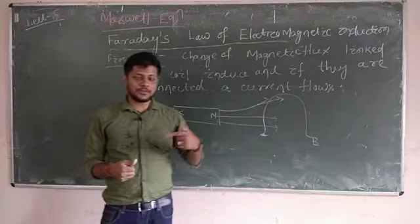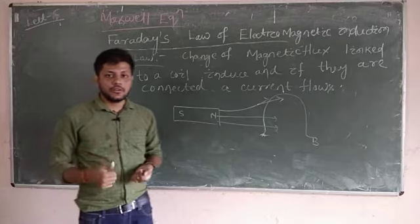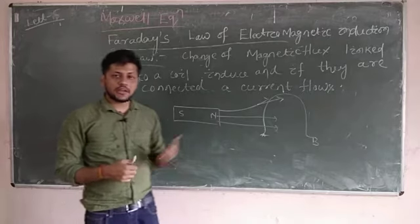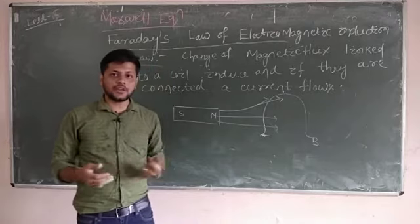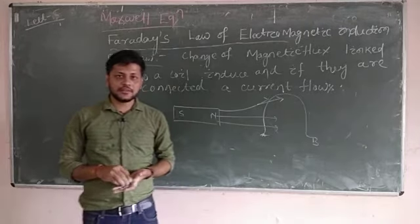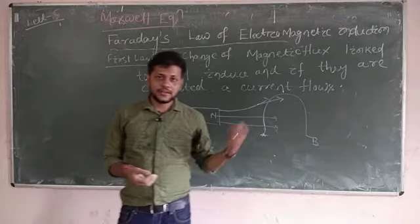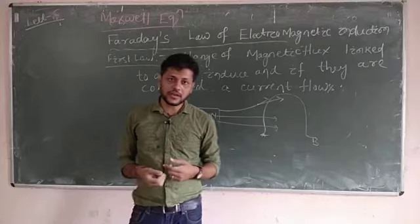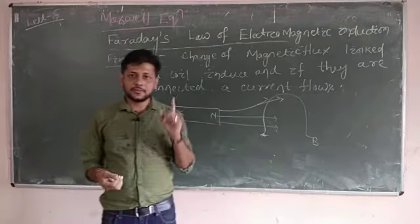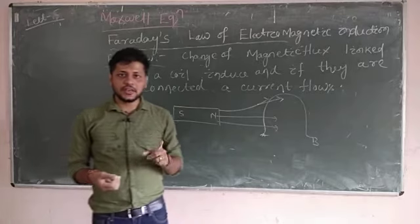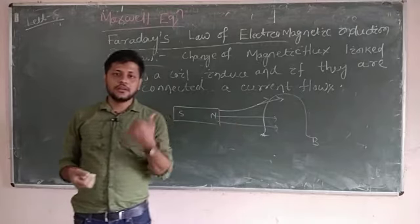Till now we have discussed three Maxwell equations. The first one is Gauss's law for electricity. The second is Gauss's law for magnetism. The third and very important one is the modified Ampere's circuital law, in which I discussed displacement current. In space, displacement current flows. Inside a conductor or solid body, conduction current flows. The source for conduction current is charge, and the source for displacement current is the change in electric field.